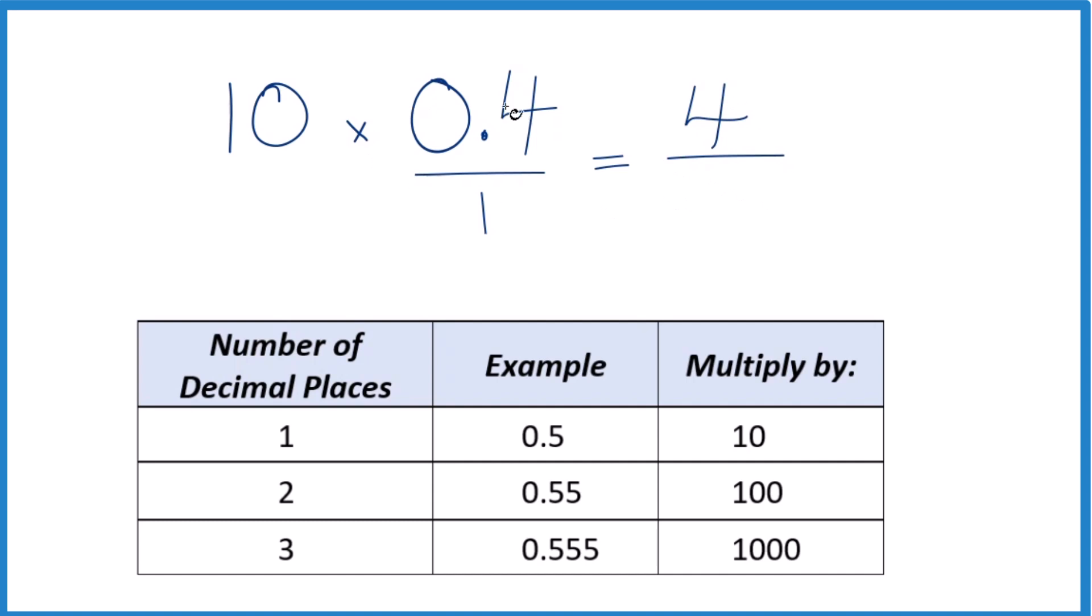Then because we multiplied the numerator, we do need to multiply the denominator by 10. That's because 10 divided by 10 is just 1. Multiplying by 1 doesn't change the value, just the way we write it. So we can write it like a fraction. 10 times 1 is 10, and there's our fraction.